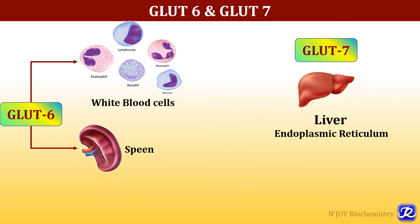GLUT 6 is located in white blood cells and spleen, and its action is not yet known. GLUT 7 is present in the liver endoplasmic reticulum and is responsible for transport of glucose in the endoplasmic reticulum.